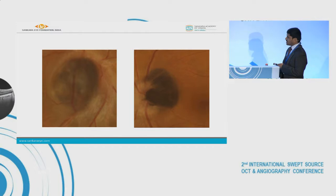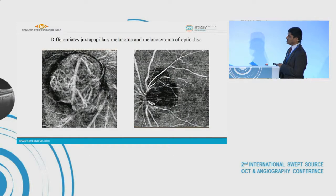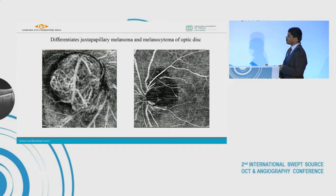Both are pigmented tumors over the disc. When you perform OCTA, one shows densely vascular, abundant vascularity, suggesting the diagnosis of a juxtapapillary melanoma.